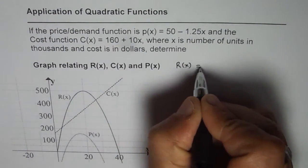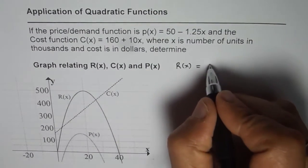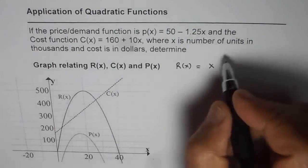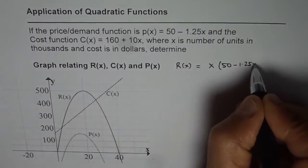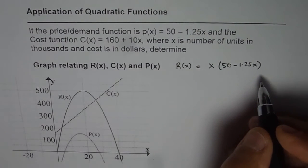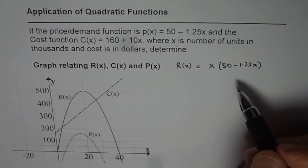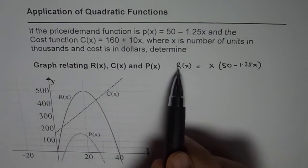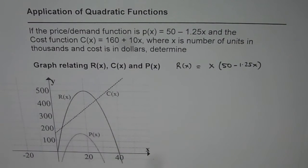As you know, revenue equals number of items times price function, that means x times P(x) which is 50 - 1.25x. I'm not explaining here anything but just summarizing the things which we learned in the previous videos.